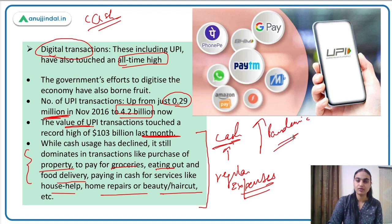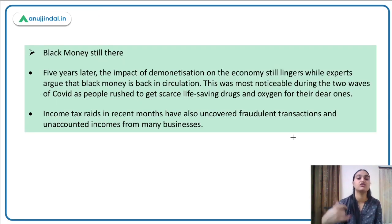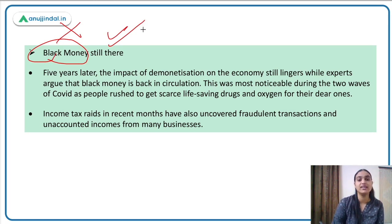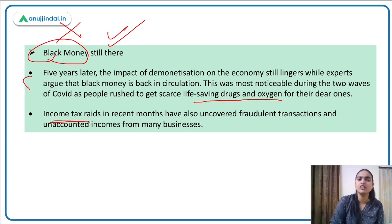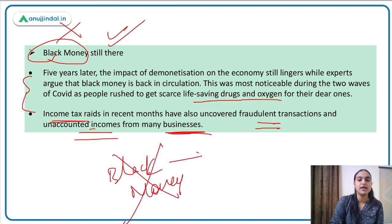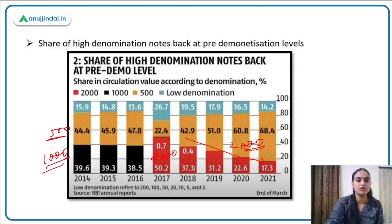Five years after demonetization, the problem of black money has still not been solved. During the pandemic, people were able to buy life-saving drugs and oxygen at very high costs through unaccounted means. Income tax raids in recent months have shown that black money still exists. There are fraudulent transactions and unaccounted incomes from many businesses. Despite banning high-denomination notes or reducing their circulation, the black money issue has not yet been fully resolved.